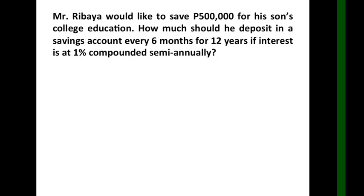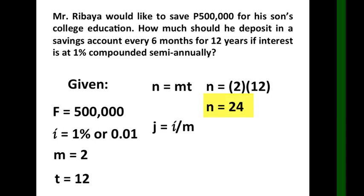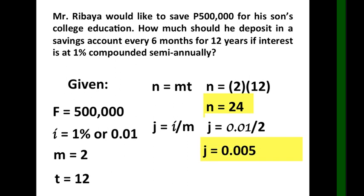Since Mr. Ribaya wants to save 500,000 in the future, that is the future value. So F equals 500,000; i equals 1% or 0.01; m equals 2, because compounded semi-annually means two six-month periods in one year; and t equals 12 years. Solving for n: m times t equals 2 times 12 equals 24. For j: i over m equals 0.01 divided by 2 equals 0.005.